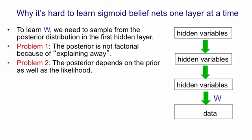But because we have higher layers of hidden variables, they're not even independent in the prior. Those hidden variables in the layers above create a prior, and that prior will itself cause correlations between the hidden variables in the first layer.